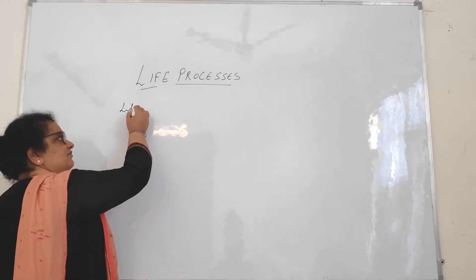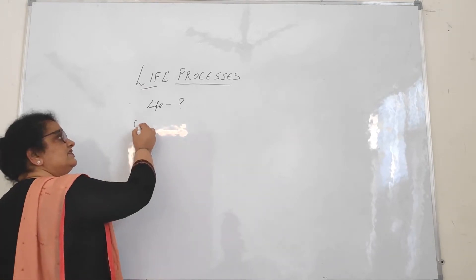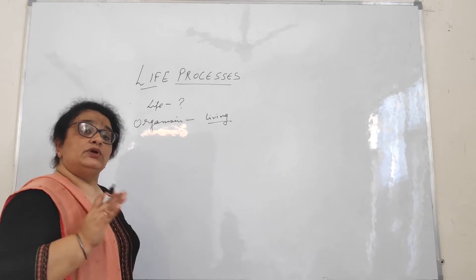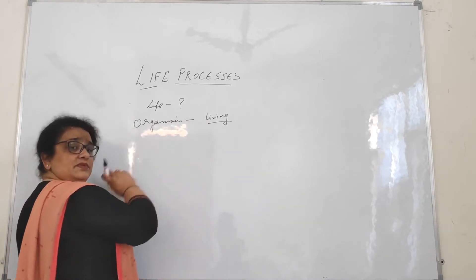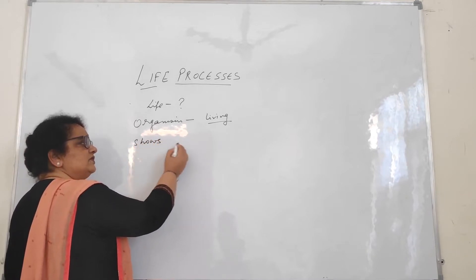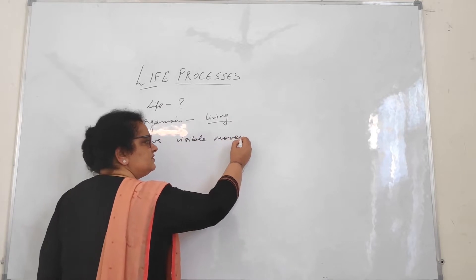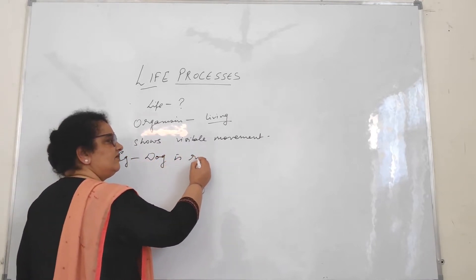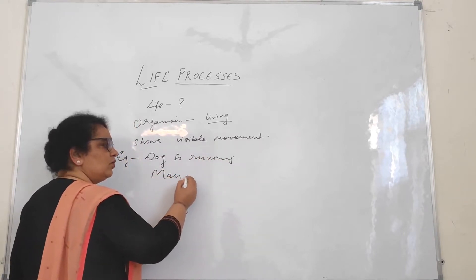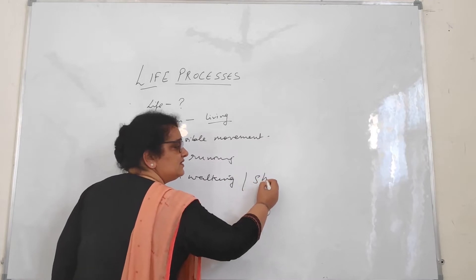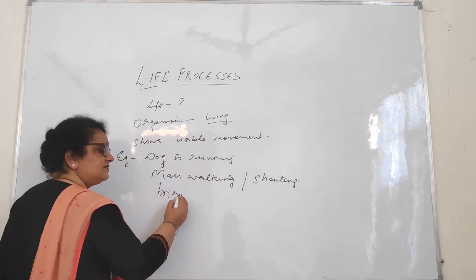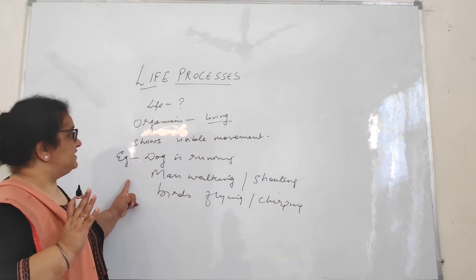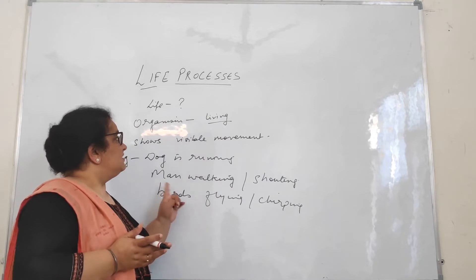Let's start with: what is life? Why do we call an organism to be living? We may say an organism is living if it shows some visible movement — like a dog running, a man walking, a man shouting, birds flying or chirping. If anything shows visible movement, we may say the organism is living.